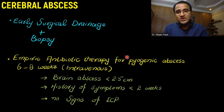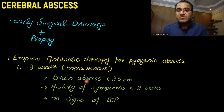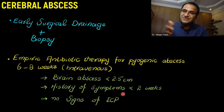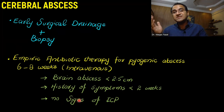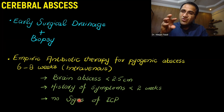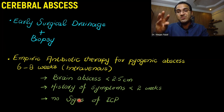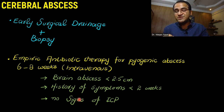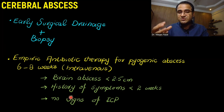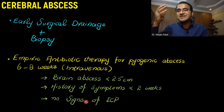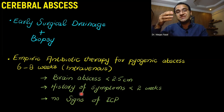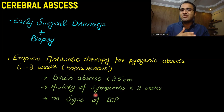Empiric antibiotic therapy for pyogenic abscess can be given for six to eight weeks via the IV route. It is given if the brain abscess is small — less than 2.5 cm — if there is a history of symptoms of less than two weeks, and if there are no signs of increased intracranial pressure. In those cases, you can give empiric antibiotic therapy and expect reduction in abscess size. But if the abscess is large, causing signs of increased intracranial pressure, or if the history is more than two weeks, antibiotic therapy is not very effective and surgical drainage is required.